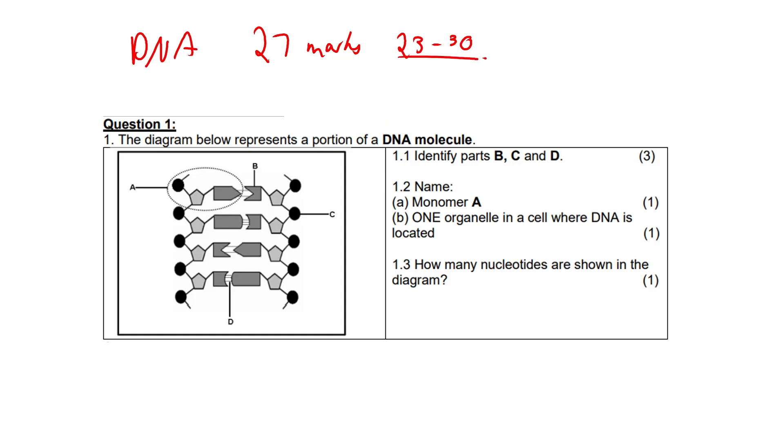Question 1.1, identify parts B, C, and D. In the diagram below, a portion of a DNA molecule has been represented. B represents a nitrogen base, one of the four types: adenine, thymine, cytosine, guanine, and these are involved in base pairing.